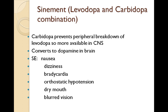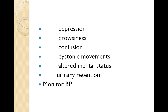With Sinemet — the levodopa-carbidopa mix — carbidopa blocks the breakdown so that levodopa can enter the brain and convert to dopamine. Signs and symptoms to monitor include blood pressure changes, nausea and vomiting, blurred vision, depression, altered mental status, urinary retention, and unsafe drops in blood pressure.